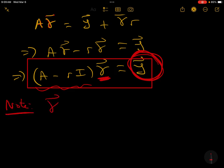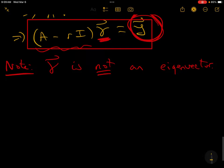I'll make a note here. Gamma is not an eigenvector. It's just something that makes the solution work. All right, let's go back to our problem.